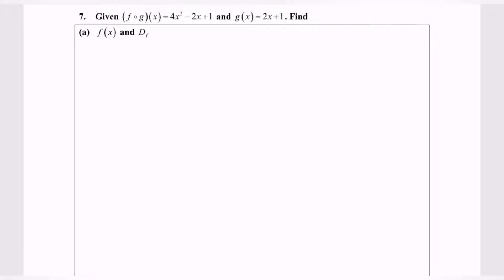Let's substitute f∘g. So f∘g(x) = 4x² - 2x + 1. Now the question asks us to find f(x), which is the external function.